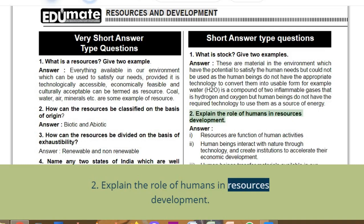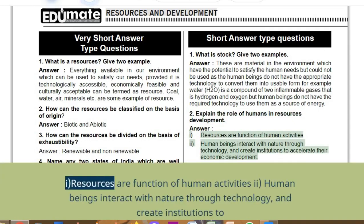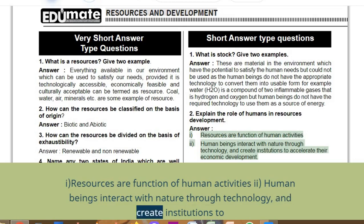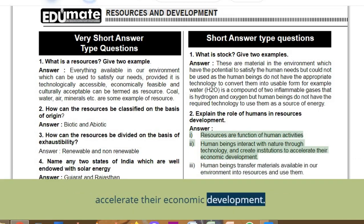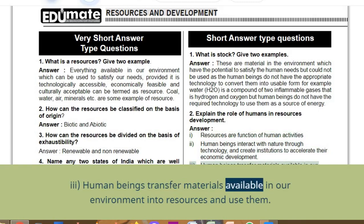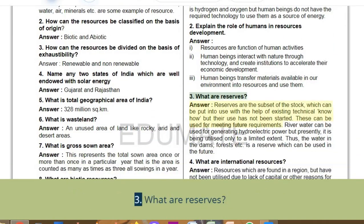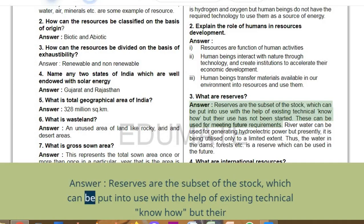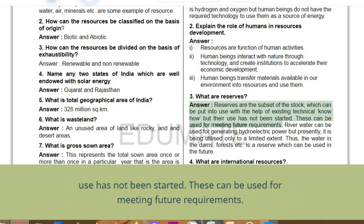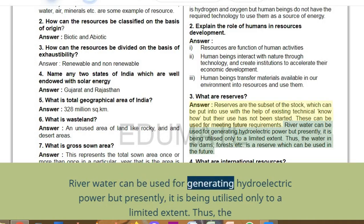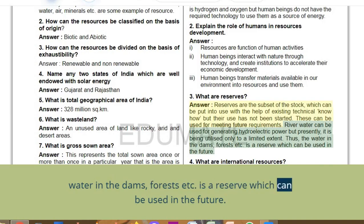Q2: Explain the role of humans in resource development. Answer: Resources are a function of human activities. Human beings interact with nature through technology and create institutions to accelerate economic development. Human beings transfer materials available in our environment into resources and use them. Q3: What are reserves? Answer: Reserves are the subset of stock which can be put into use with existing technical know-how but their use has not been started. River water can be used for generating hydroelectric power but is presently utilised only to a limited extent — thus, water in dams and forests is a reserve for the future.